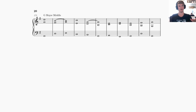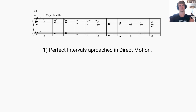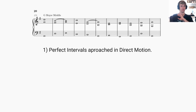The first and most important mistake to look for would be perfect intervals approached in direct motion — either parallel motion or similar motion. In three voices, we typically don't want any direct motion to perfect intervals, and similar motion should be avoided at all costs. With four voices, most agree it's not as bad in inner voices, but in three voices you'll want to make your own conclusion.